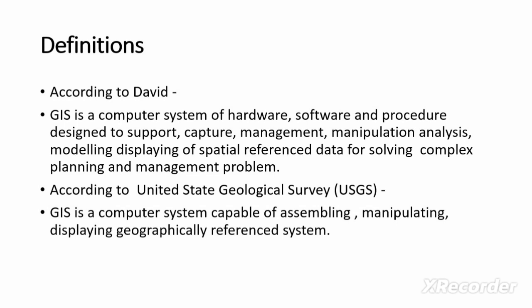According to the United States Geological Survey (USGS), GIS is a computer system capable of assembling, manipulating, and displaying geographically referenced data — data assigned to real-world coordinates like latitude and longitude. What makes GIS different from other computer systems is this unique quality: we assign coordinates to any location.